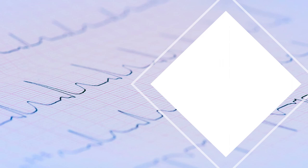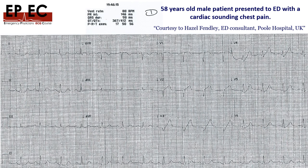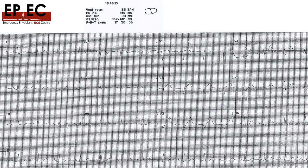Back to our case: this 58-year-old male presented to ED with cardiac-sounding chest pain. He was seen by Dr. Hazel Findley, an ED consultant at Poole Hospital. She was concerned about the clinical presentation and the De Winter sign, so she activated the cath lab and started serial ECGs. ECG number one was done at 19:46, showing the De Winter sign in the anterior leads.